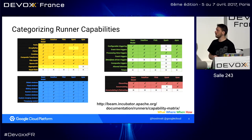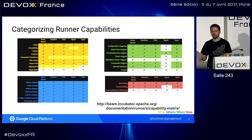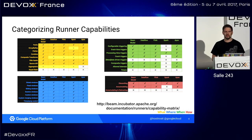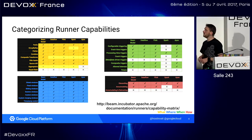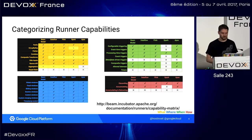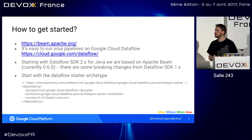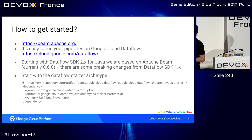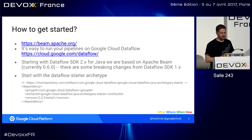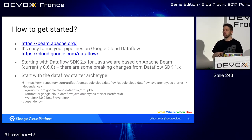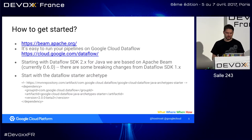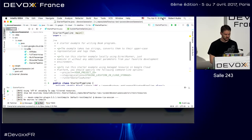You can run Apache Beam pipelines on a lot of different products. I'll show how to run them on Google Cloud Dataflow, but you can also run them on Flink, Spark, Apex, and I even read there's a Gearpump runner in the works. To get started, beam.apache.org is your first stop. Running on Dataflow is easy and fully managed. If you have an existing Flink or Spark cluster you can run pipelines there too. There's also a starter archetype to generate a starter pipeline.